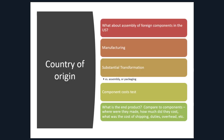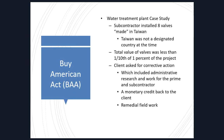Substantial transformation is what we were just talking about — the components cost test and what that end product looks like: how much did it cost, what's the cost of shipping, duties, and overhead. Some of those costs are allowable into the equation and some are not. Again, this is not our determination to make — the manufacturers themselves should be able to provide a certificate of origin that they're comfortable standing by.